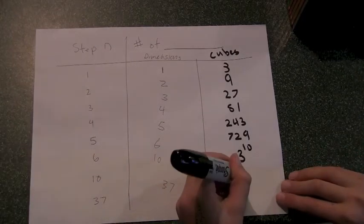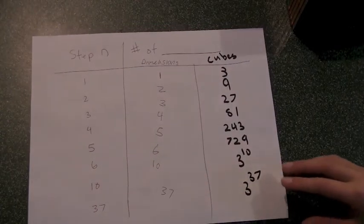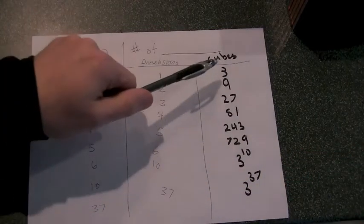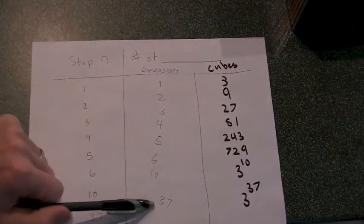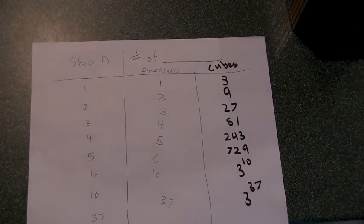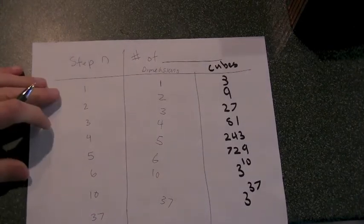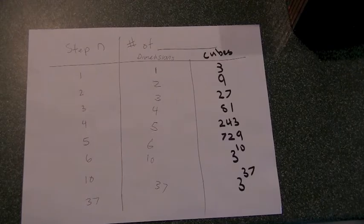Alright, now the thirty-seventh step. It's three to the thirty-seventh. Yeah, see, now that's interesting, because when you were multiplying them out, it certainly wasn't clear what the thirty-seventh step was going to be. But we can write it as three to the thirty-seventh, and that's easy enough to calculate. We could just go to Wolfram Alpha or something. Okay. Fascinating.